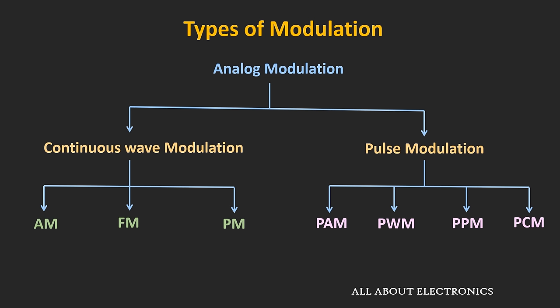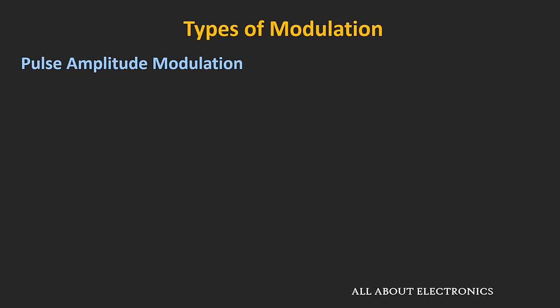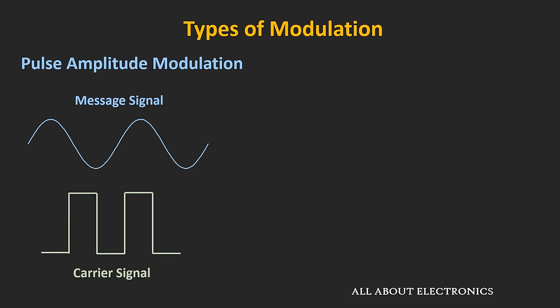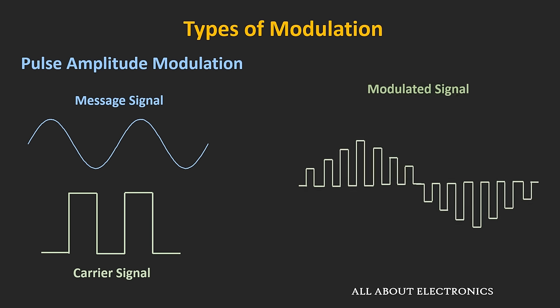Let's briefly see all these techniques one by one. In all these modulation techniques, the message signal is analog in nature, while the carrier signal is a pulse train of finite frequency. In pulse amplitude modulation, the width or duration of the pulse remains the same, but the height or amplitude of the pulse signal changes according to the message signal.